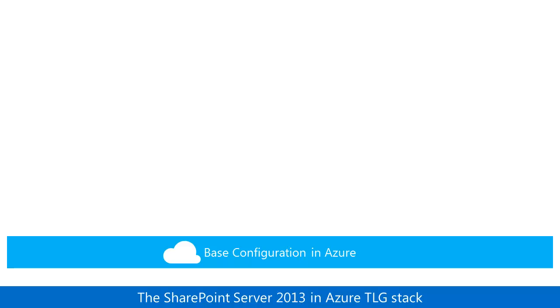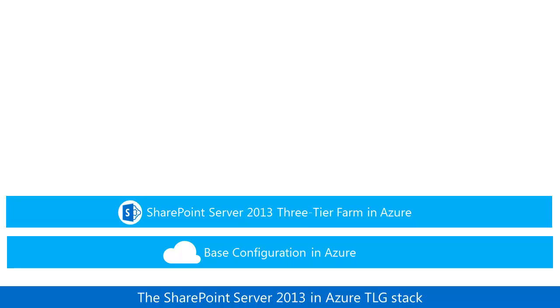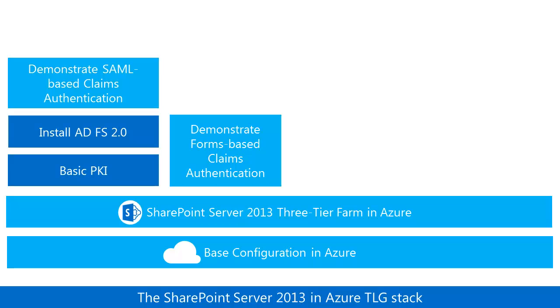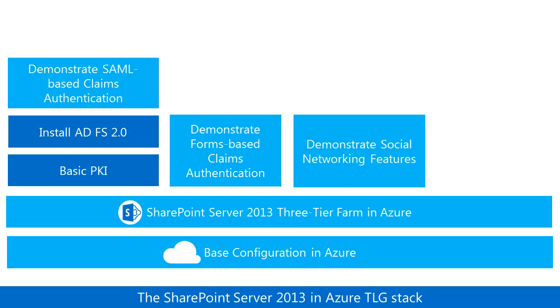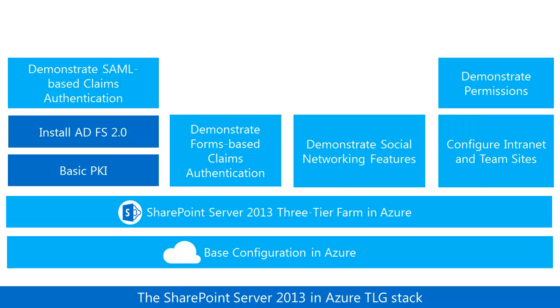For example, the SharePoint Server 2013 and Azure TLG stack extends the base configuration for a three-tier farm, and then leverages a set of existing TLGs to demonstrate authentication, social networking, and permissions.